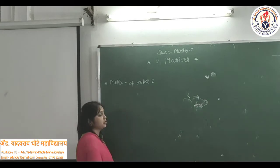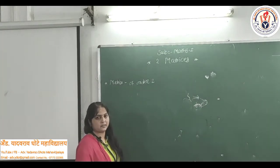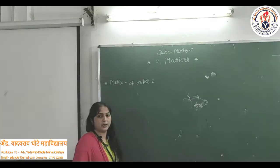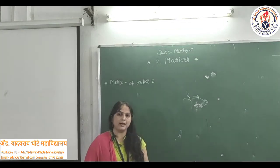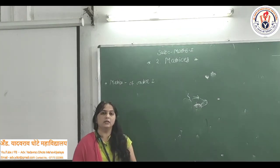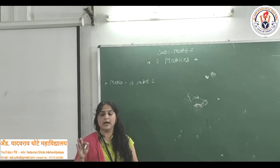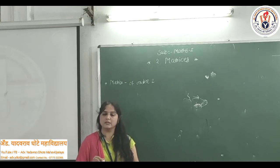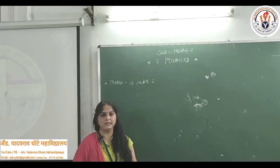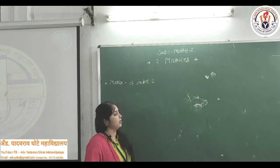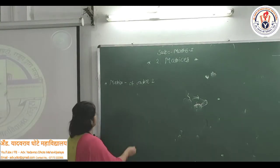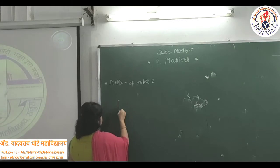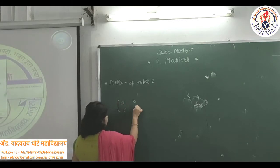First, let us see the definition of matrix. What is the matrix? A matrix of order 2 by 2 can be defined as the square arrangement of four numbers enclosed within a square bracket. For example, matrix A equals a, b, c, d.